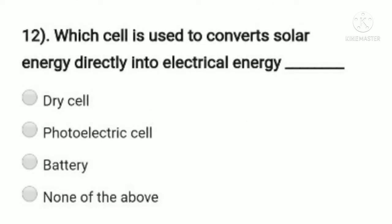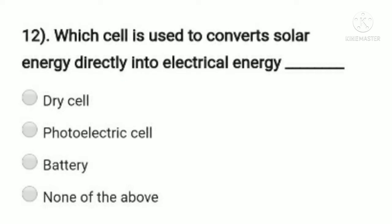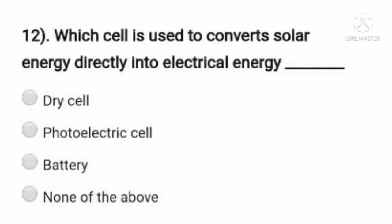Question 12: which cell is used to convert solar energy directly into electrical energy? Option A: dry cell, option B: photoelectric cell, option C: battery, option D: none of the above. The dry cell cannot convert solar energy into electrical energy, and the battery only stores energy. The solar energy is converted to electrical energy by the photoelectric cell. So option B, photoelectric cell, is the right answer.